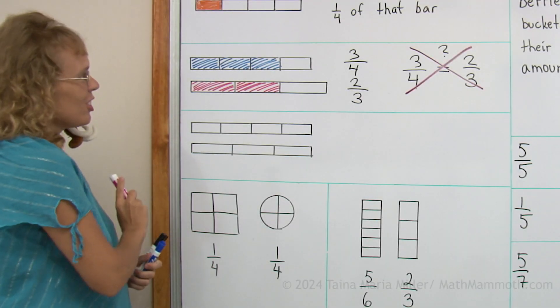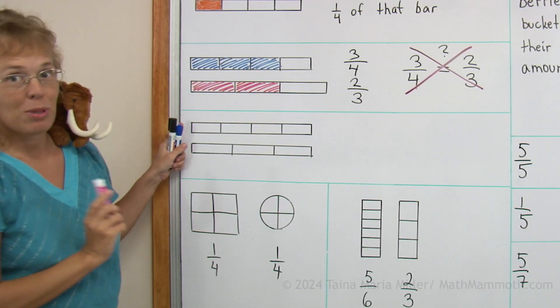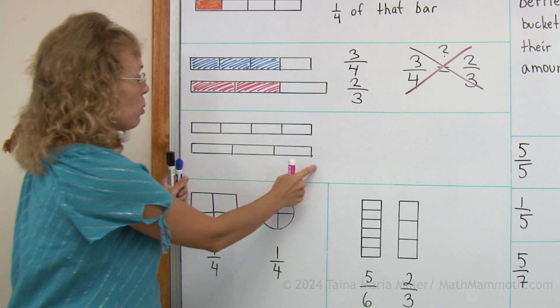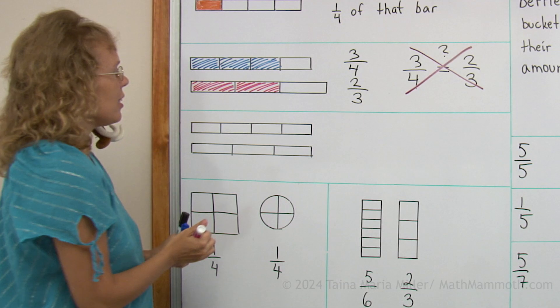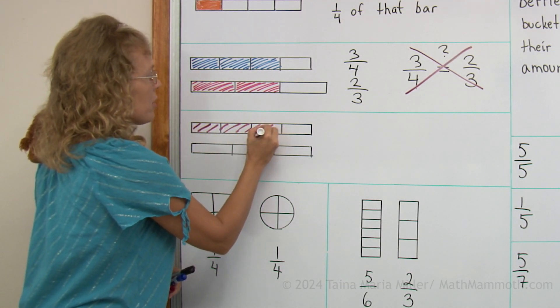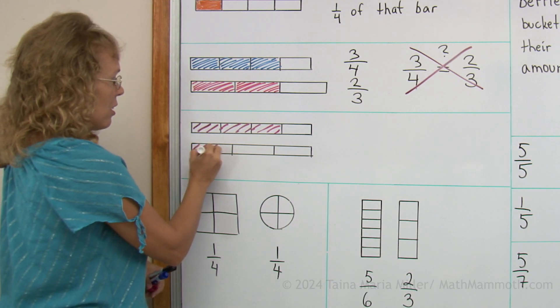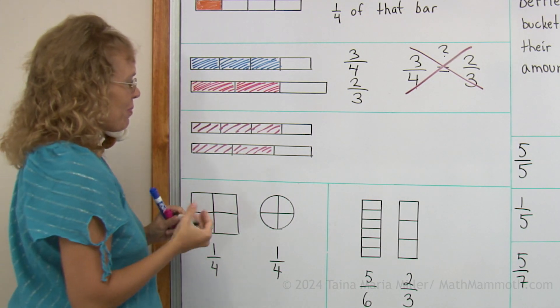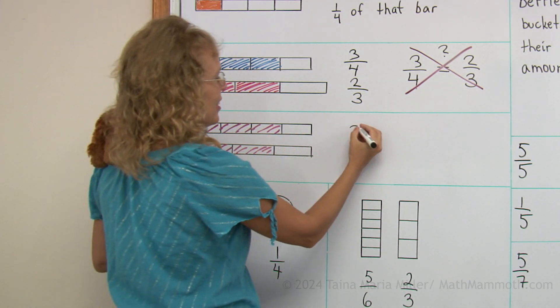In my next picture, we have two fraction bars that are the same length. So now we have two wholes that are the same size. And now if I take three-fourths of this one and then two-thirds of this one, now we can compare these two fractions. You can see two-thirds is less.